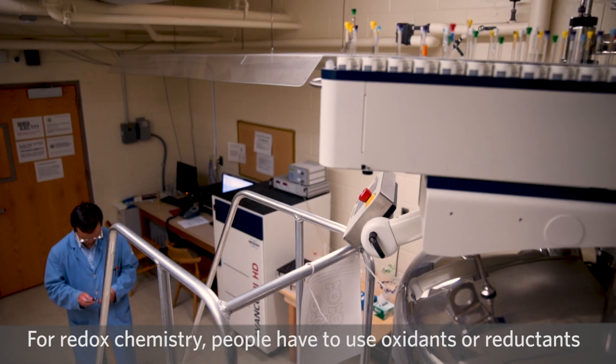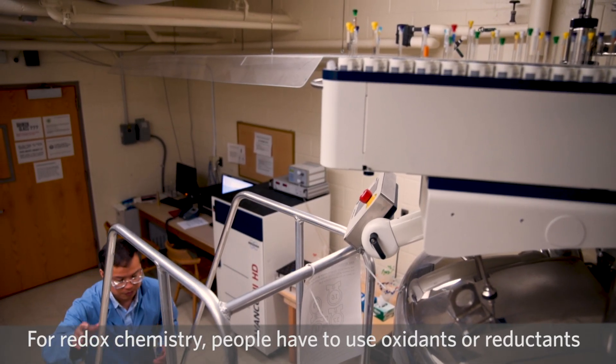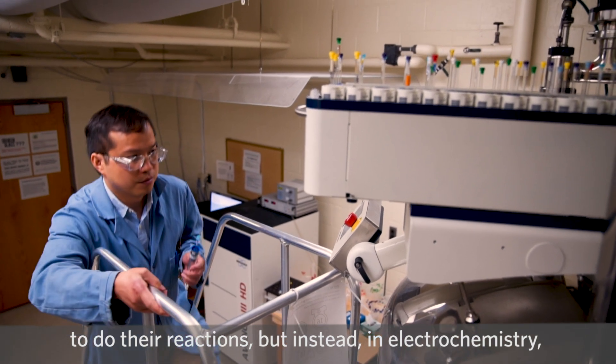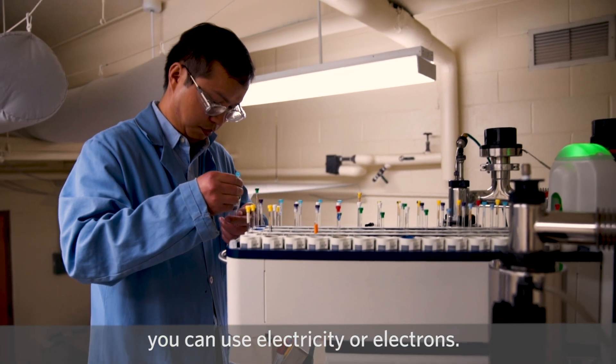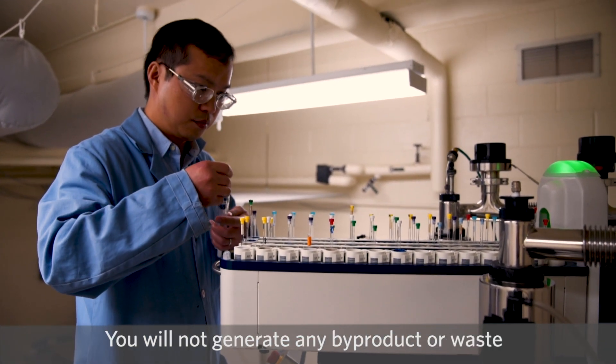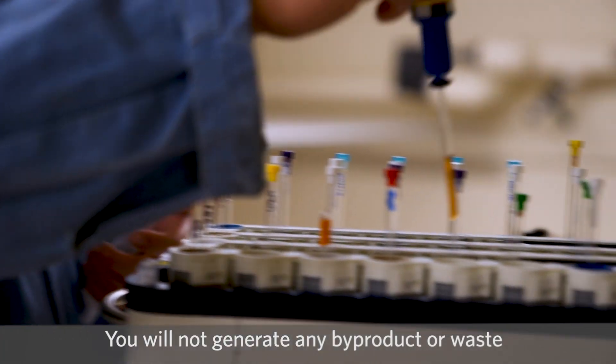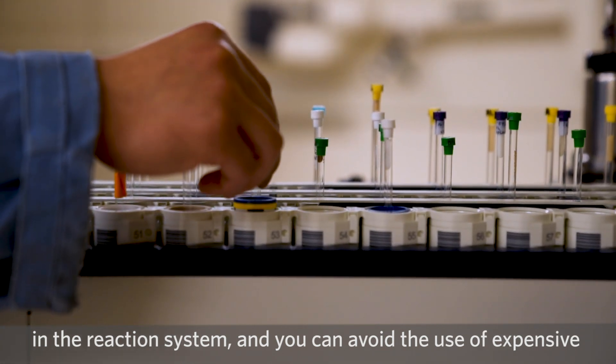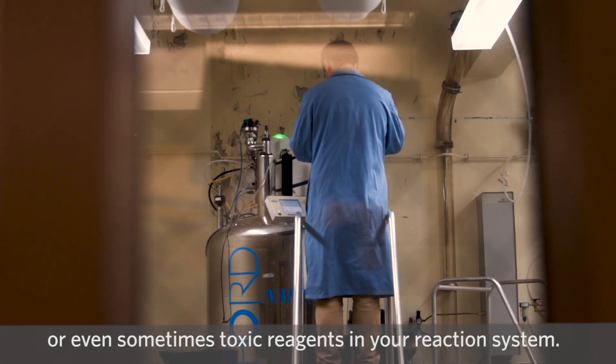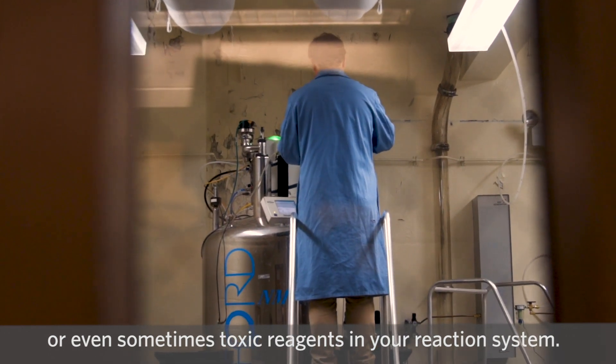For redox chemistry, people have to use oxidants or reductants to do the reaction. But instead, in electrochemistry, you can use electricity or electrons. You will not generate any byproduct or waste in the reaction system, and you can avoid the use of expensive or even sometimes toxic reagents.